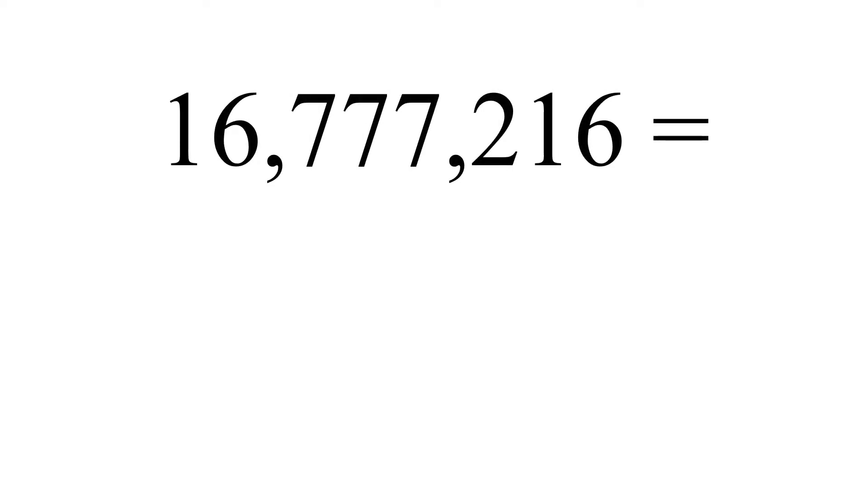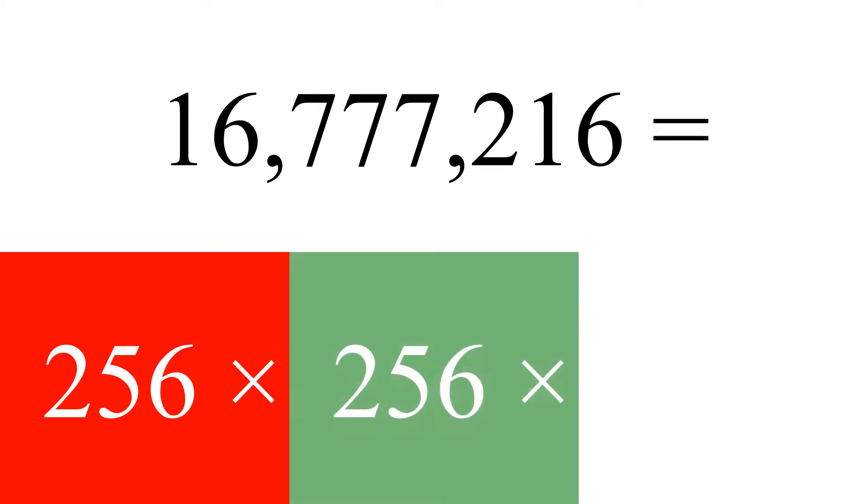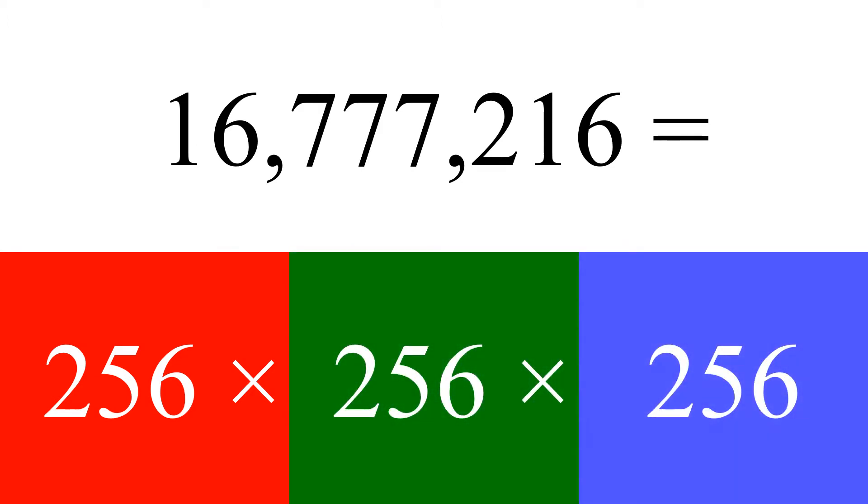By using a potentiometer for the three pins, you can create 16,777,216 colors instead of just eight with a standard resistor. Because there are 256 variations of red, 256 variations of green, and 256 variations of blue.